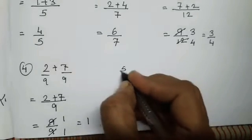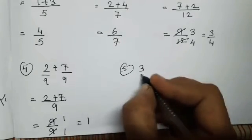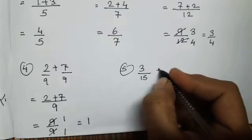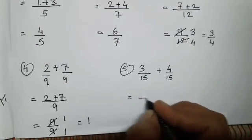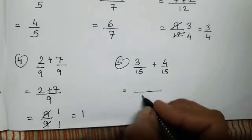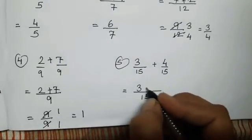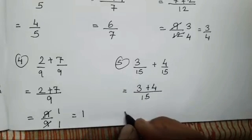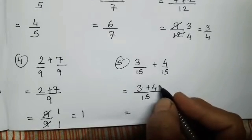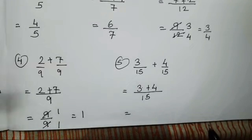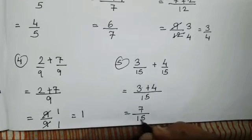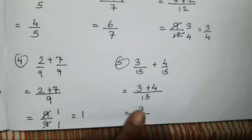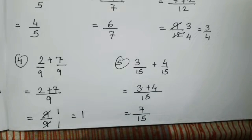The fifth sum is 3 upon 15 plus 4 upon 15. We will write 15 once. 3 plus 4 is going to be 7 upon 15. Now 7 and 15 cannot be divided or reduced, so we will keep it as it is.